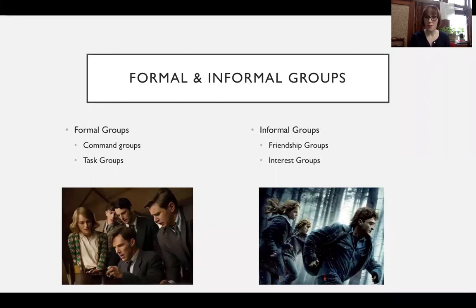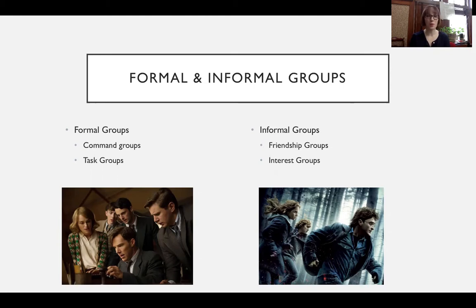Your textbook notes that there are different kinds of groups in organizations and outside of organizations. We can have formal and informal groups. Formal groups include command groups and task groups. Command groups have a specific place in the organizational hierarchy, tend to have more generalized goals — for example, an HR group or HR division would be a command group. We can find them in an organizational chart, understand their responsibilities, and they tend to be pretty permanent — there's no point at which that group is supposed to disband. Task groups, on the other hand, are formal but not permanent. Task groups are oriented around a specific task or specific goal.